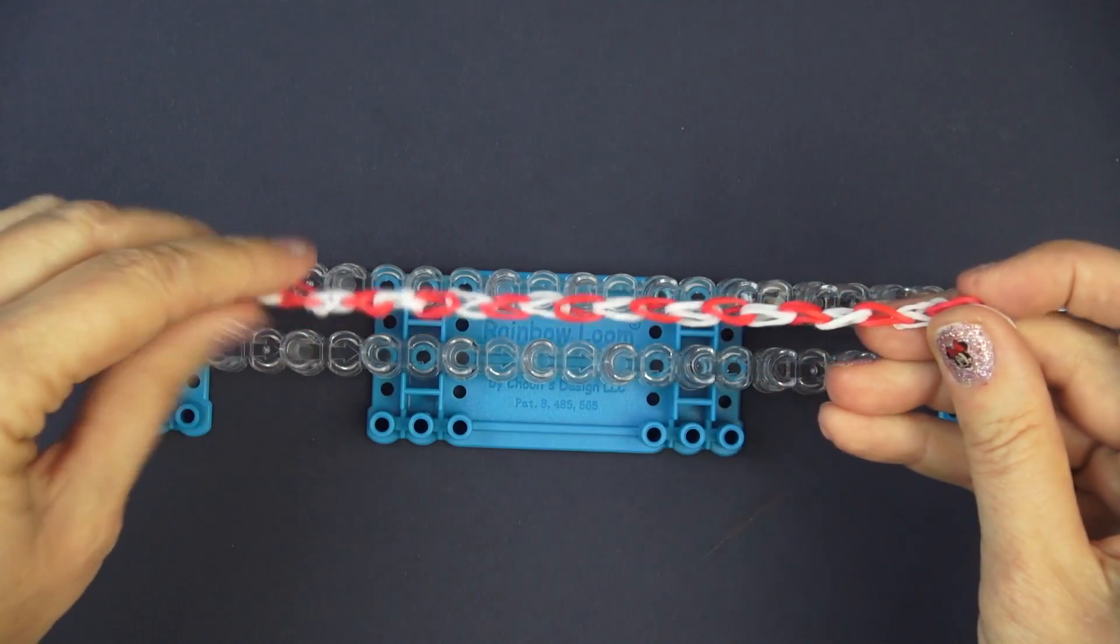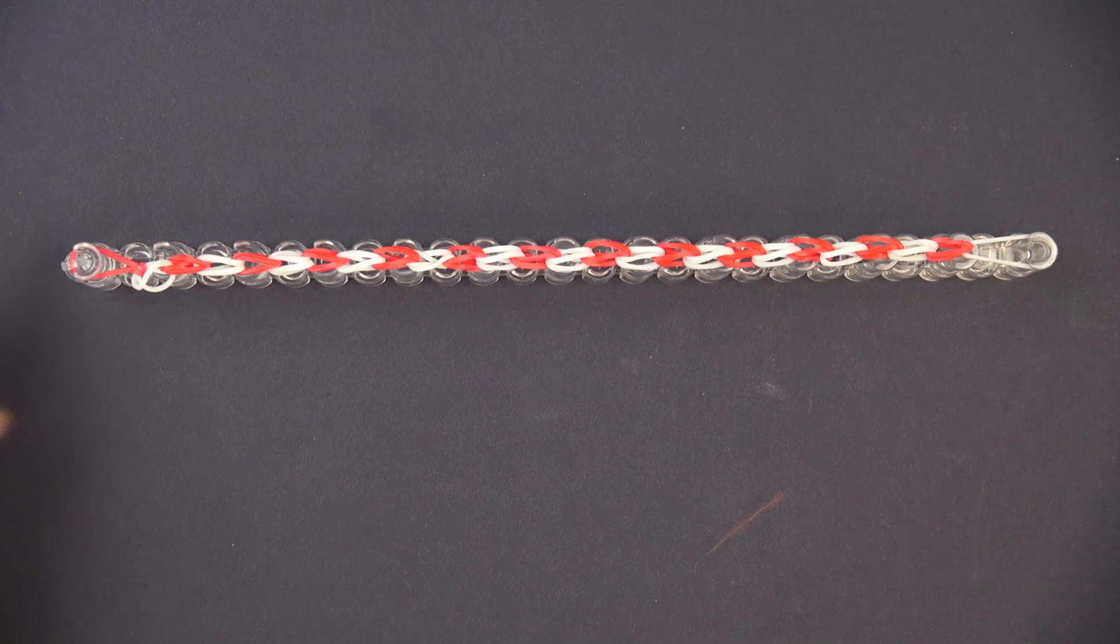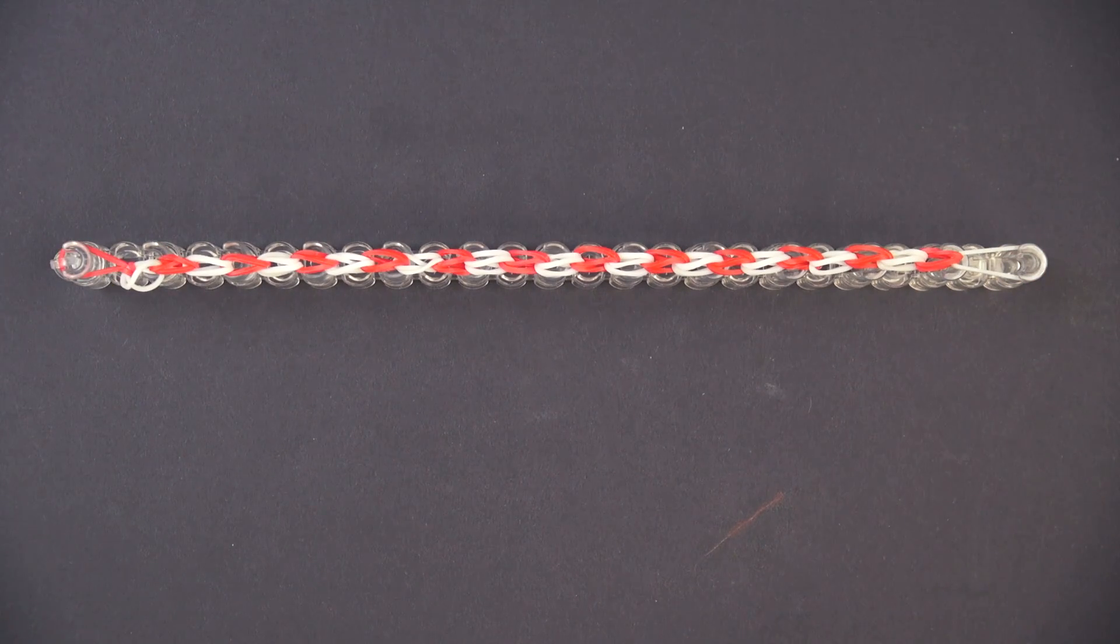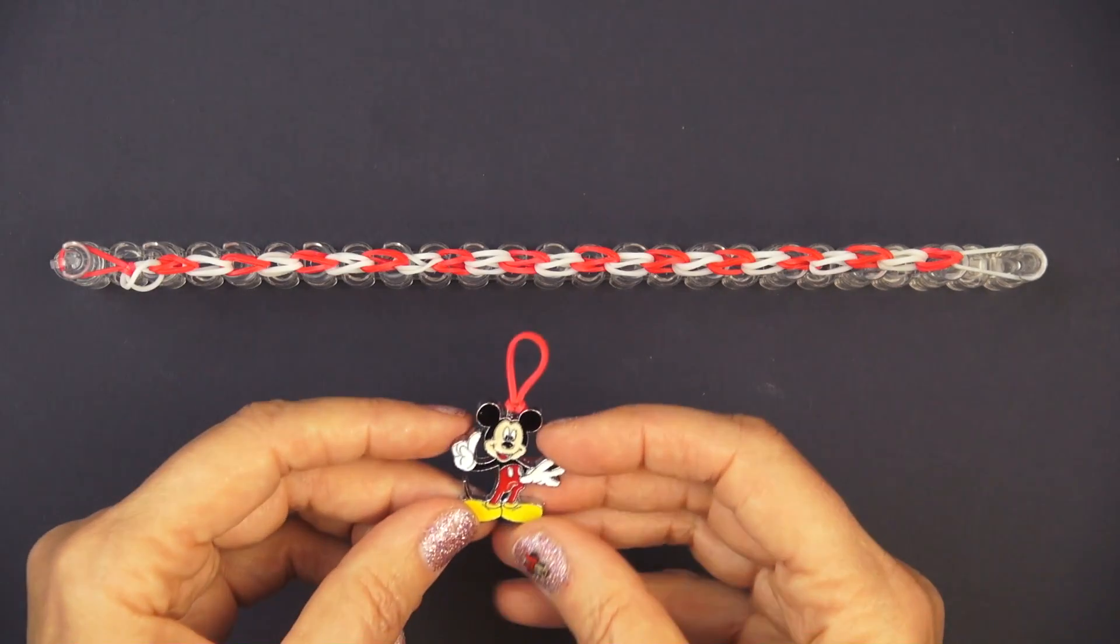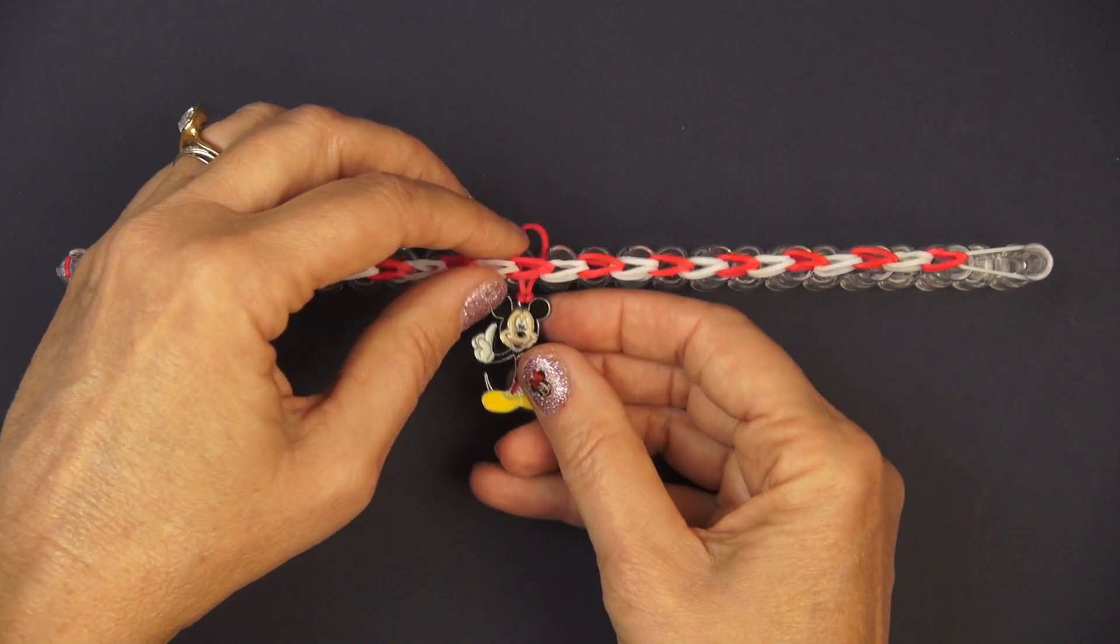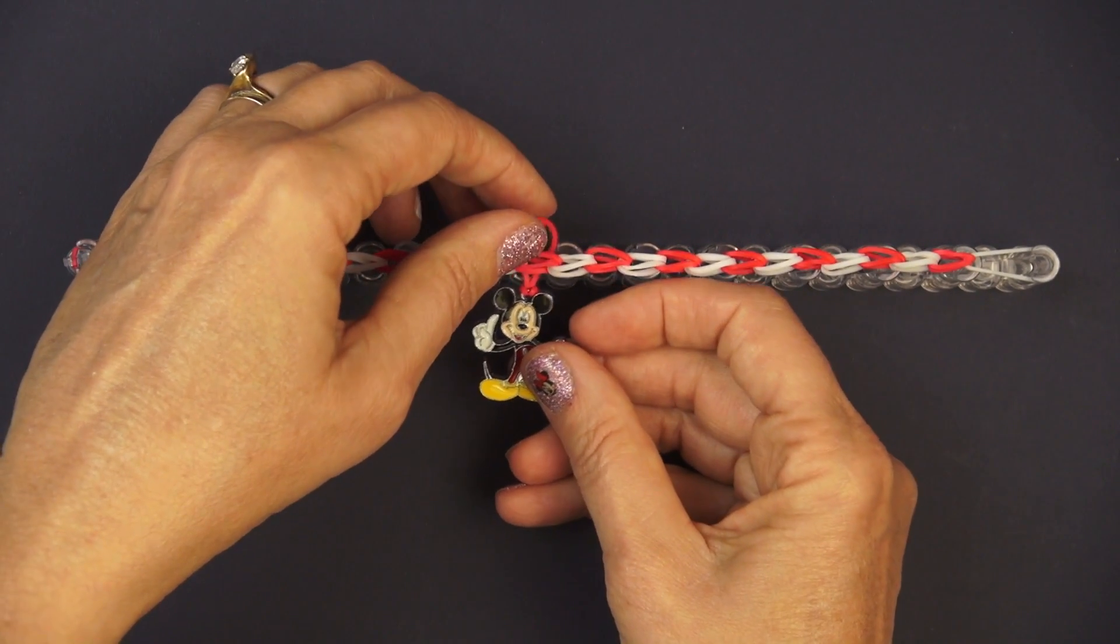There we go, there we have it, our cute single loop bracelet. And you know even though it's a simple bracelet it doesn't mean that we can't add a little something extra. So what do you think about adding a charm to this bracelet? I think it'd be a good idea and to do that I'm just going to take this rubber band and take it around Mickey Mouse.